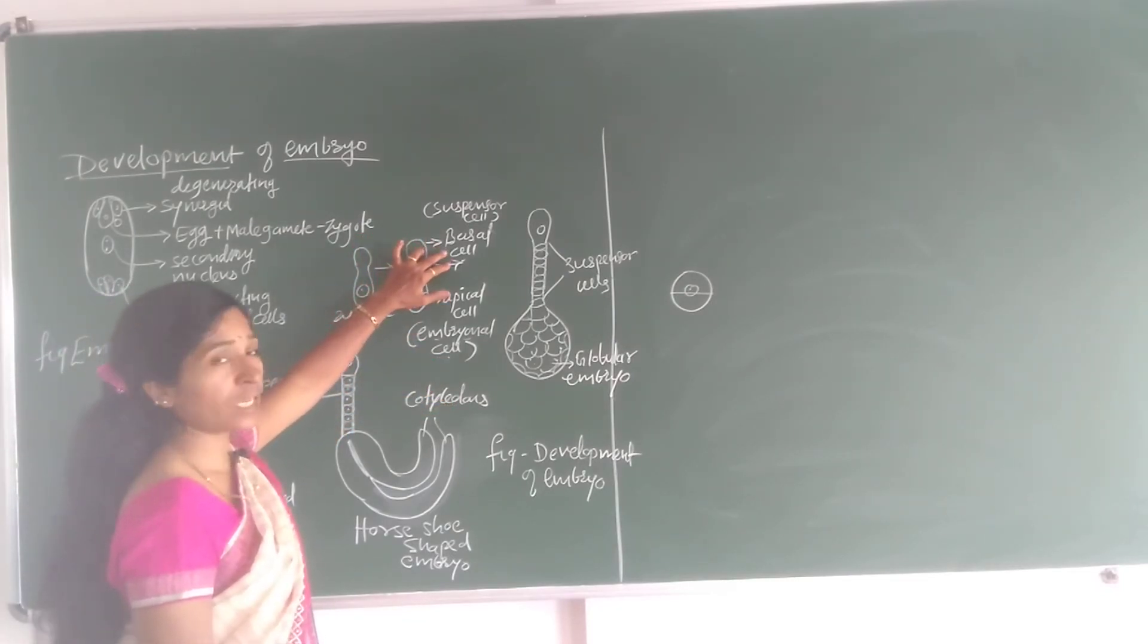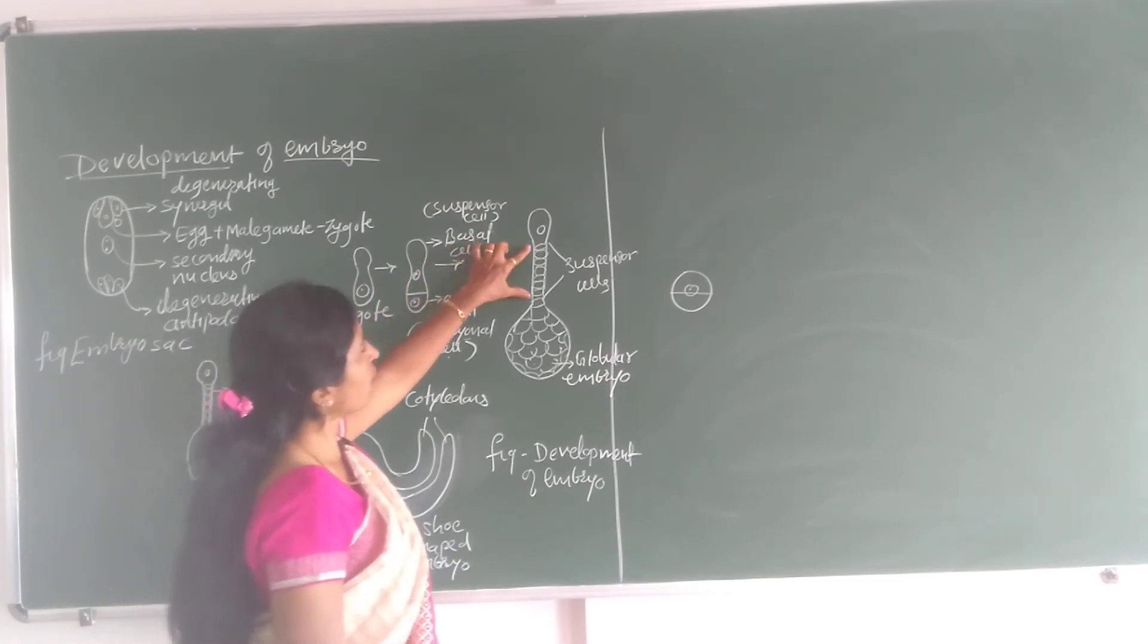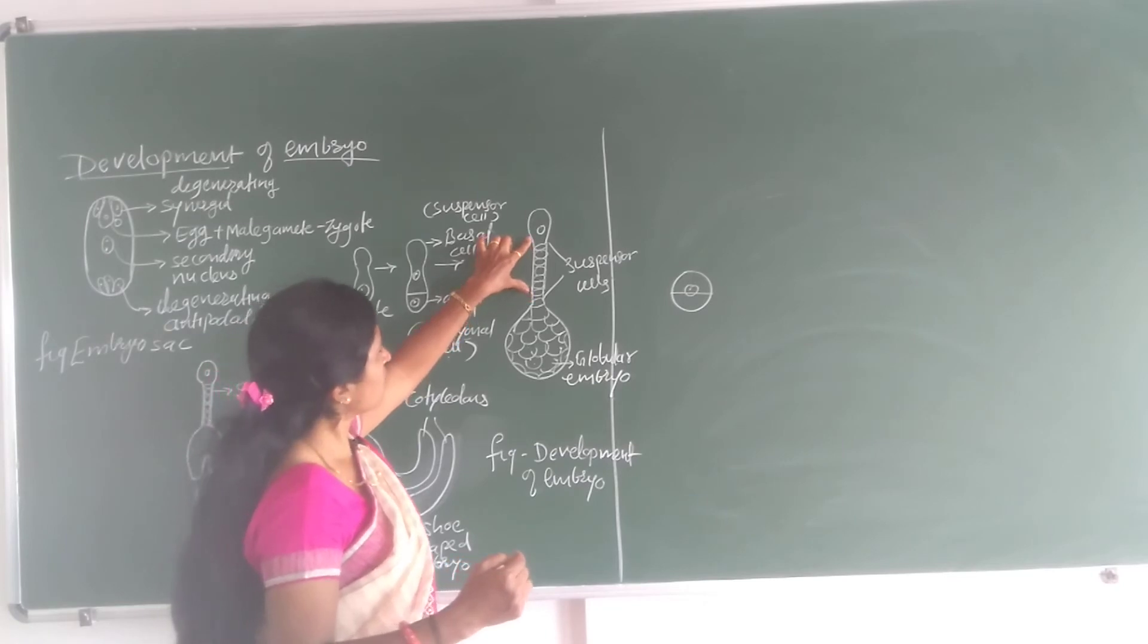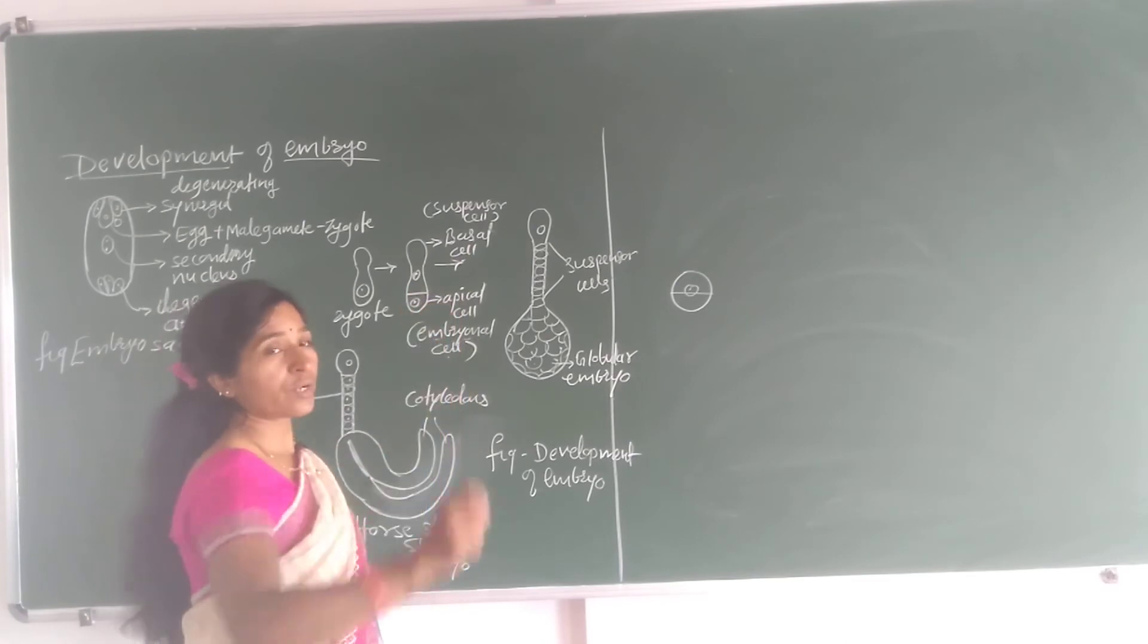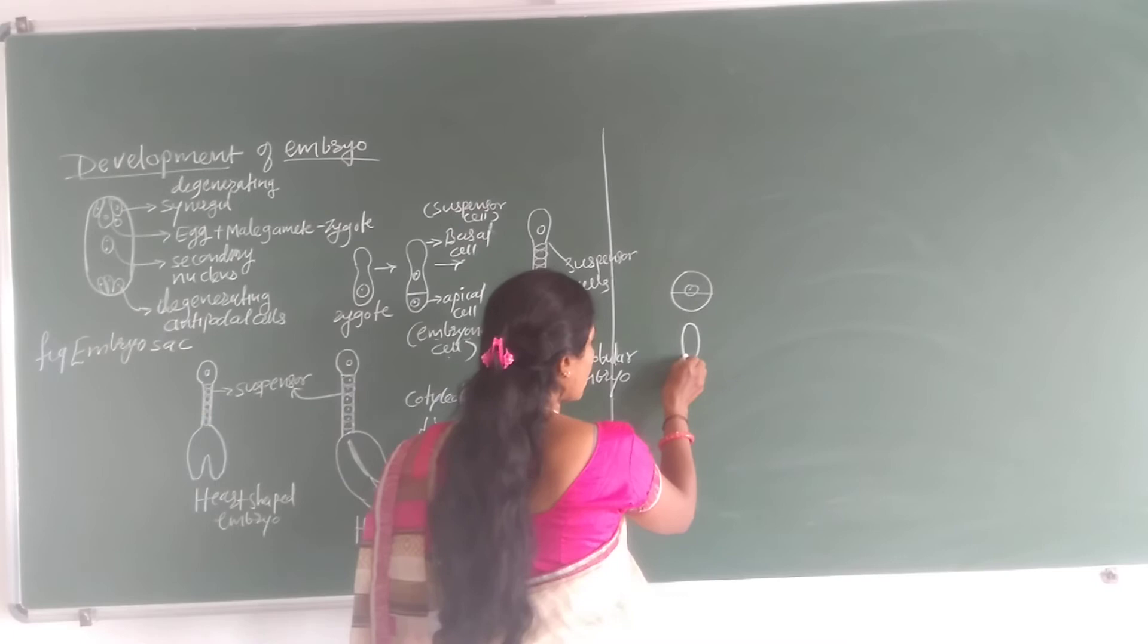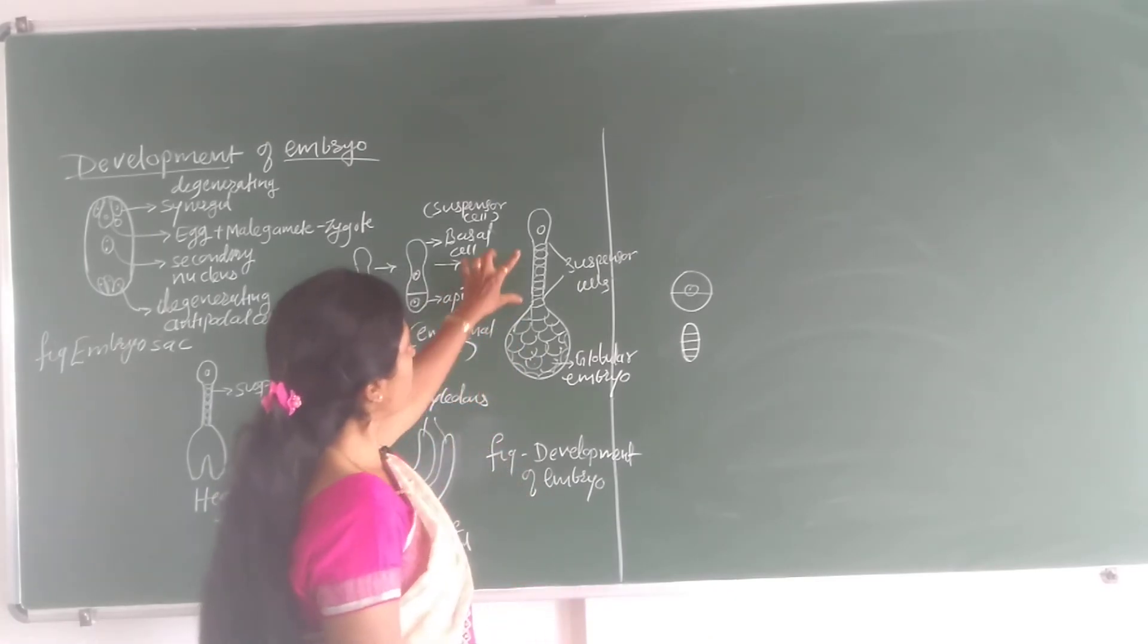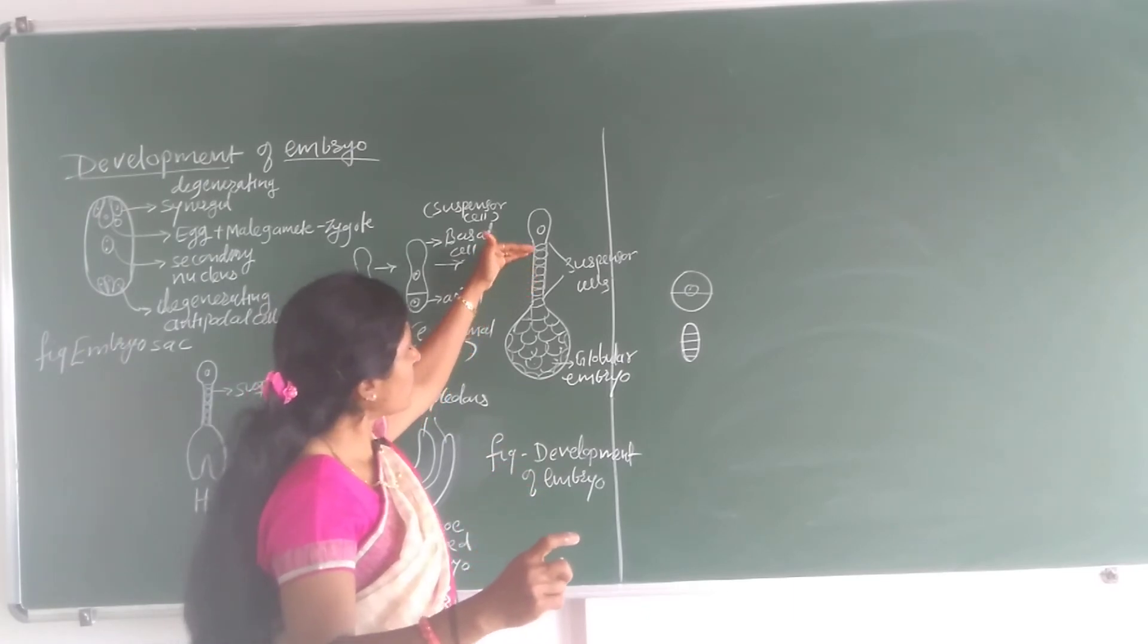This basal cell undergoes a transverse division. Repeated transverse division takes place in the basal cell and forms a row of cells. This is called suspensor cells. Now this basal cell undergoes many, look here, suppose this is basal cell. That basal cell undergoes many mitotic divisions and transverse divisions take place and form a number of cells. And these cells are arranged in a row of cells.